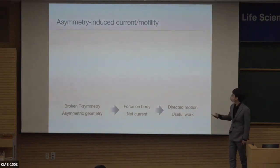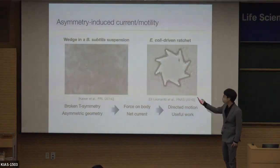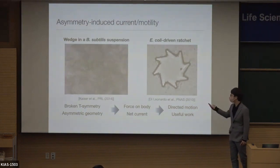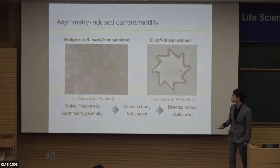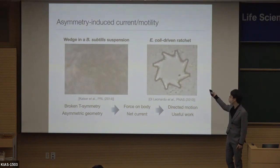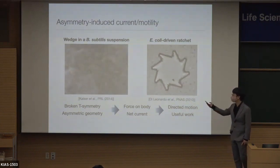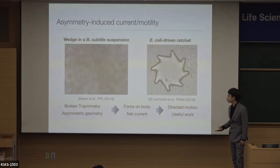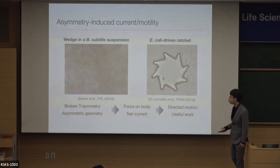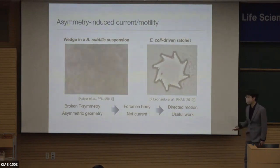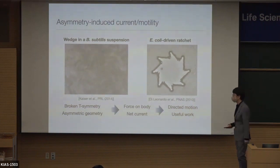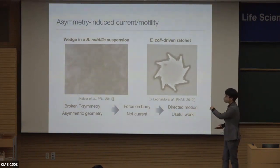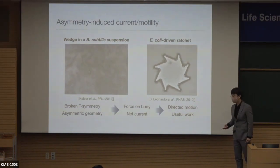These are not just schematic drawings — you can really see this happening. These are well-known experiments using wedge-like and gear-like objects. As you can see, these objects just start moving, even though the active particles are very simple particles just trying to move in the same direction. Consequently, they give rise to this kind of rectified motion.